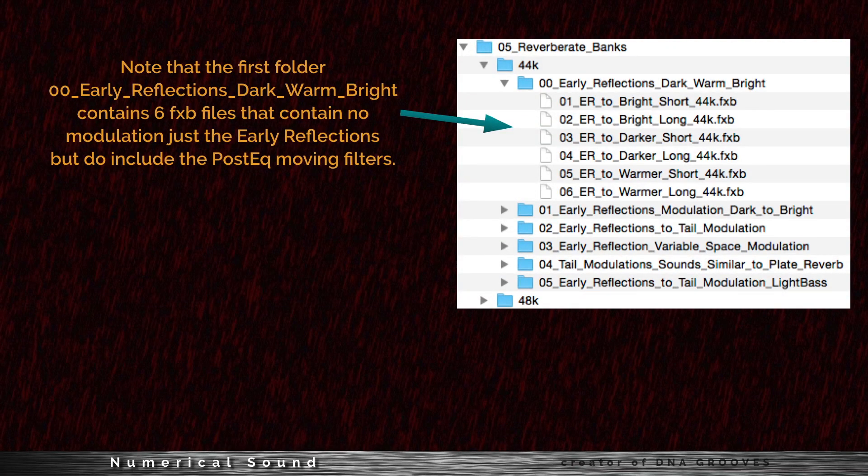Note that the first folder, 00 Early Reflections Dark Warm Bright, contains 6 FXB files that contain no modulation — just the early reflections — but they do include the post-EQ moving filters.